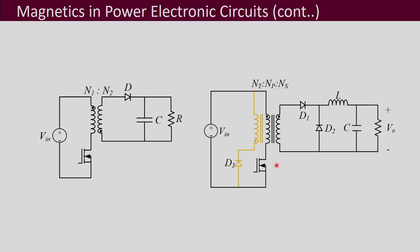This is the forward converter. Here you can see there are three windings: this is the primary, this is the secondary, and then there is another demagnetizing winding which is the tertiary winding, denoted here in yellow. So it is a three-winding transformer. The switching frequency of this MOSFET may be in the range of hundreds of kilohertz, so this transformer has to be designed accordingly. Unlike the flyback, this does not use storage in the primary and secondary windings for its operation, so it is going to be designed differently. There is also another inductor similar to the buck converter inductor that has to be designed for this converter.